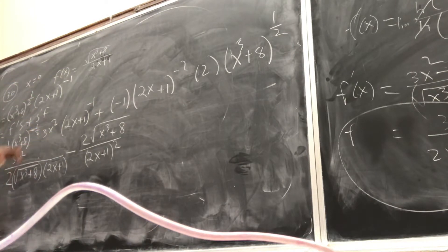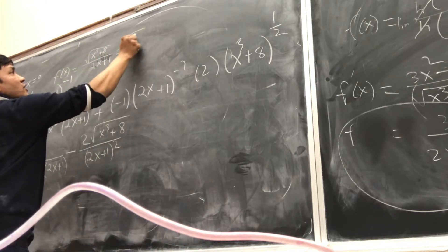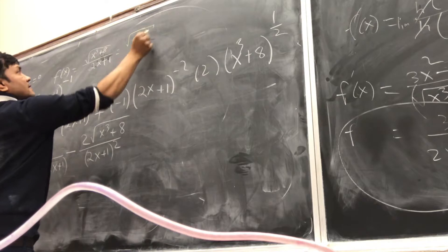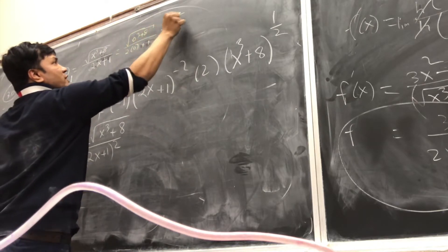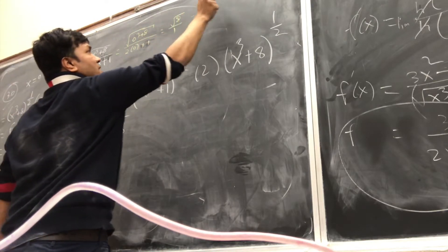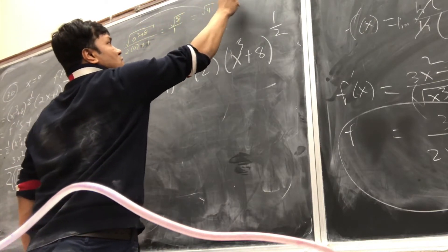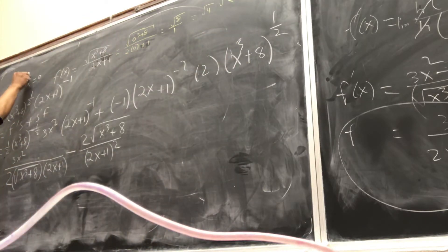Let's find out the y. If x is 0, so it is 0 cubed plus 8 over 2 times 0 plus 1. So square root of 8 over 1. Square root of 8 is 2 radical 2. So y is 2 radical 2. Do you agree?